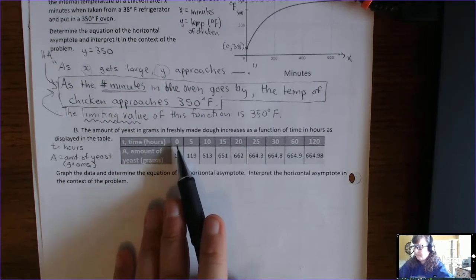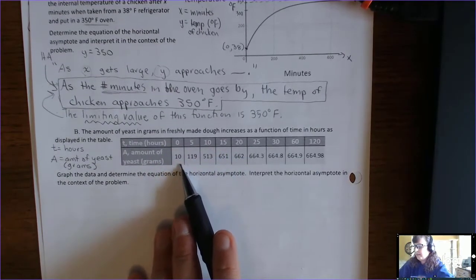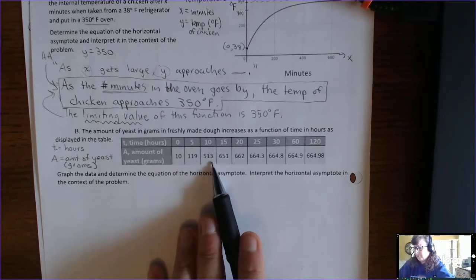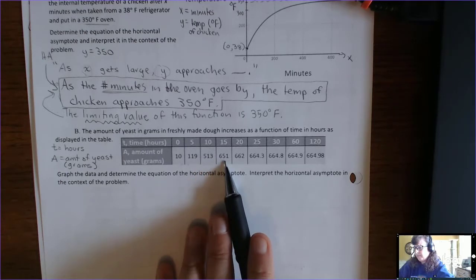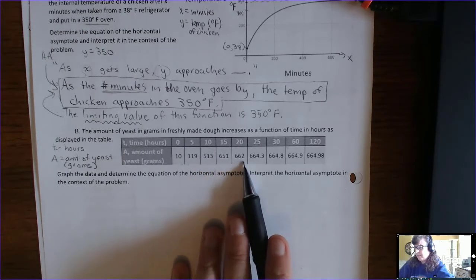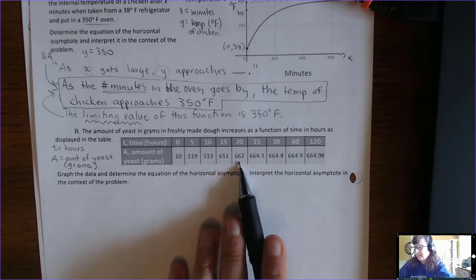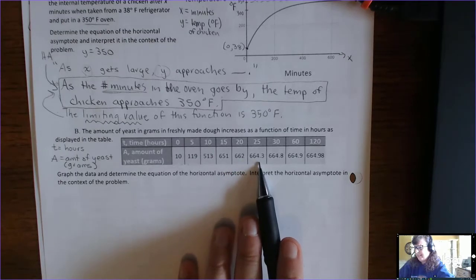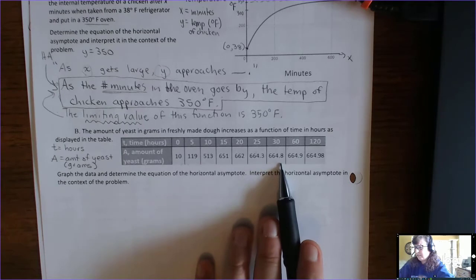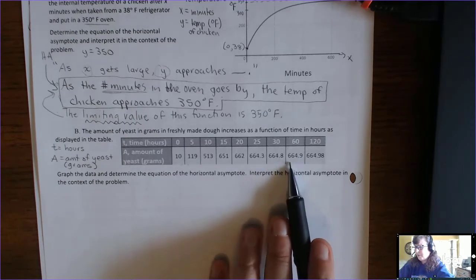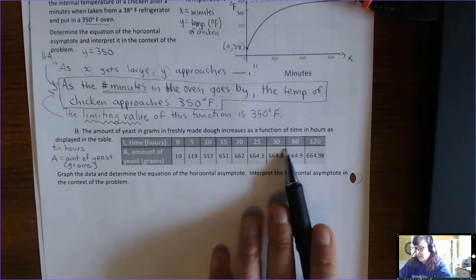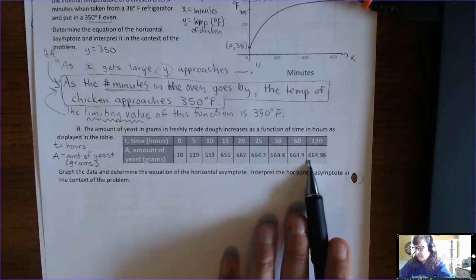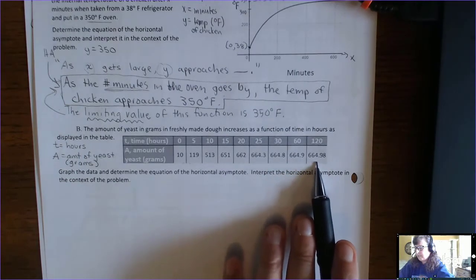Looking at the table: at 10 minutes there are 10 grams of yeast, which shoots up to 119 grams, then 513 grams. At 15 minutes it's 651 grams, at 20 minutes 662 grams — only an 11-gram change. At 25 minutes it's 664.3 grams, and at 30 minutes 664.8 grams. As x gets large, y doesn't seem to be changing much — it's leveling off, suggesting there is a limiting value.